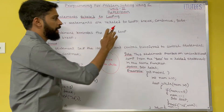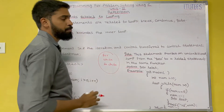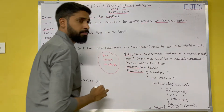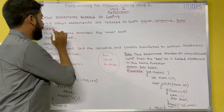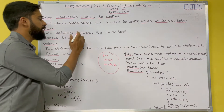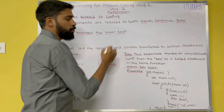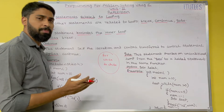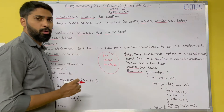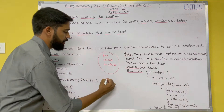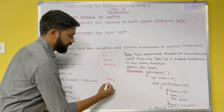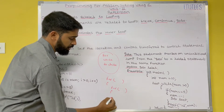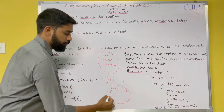Three other statements are related to loops. They are break, continue, and goto. The break statement terminates the inner loop. Inner loop means you are writing another loop inside a loop — for example, writing a for loop inside another for loop. This is called an inner loop.